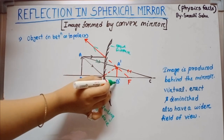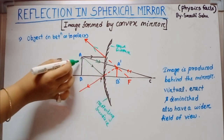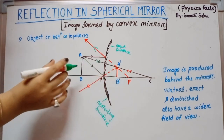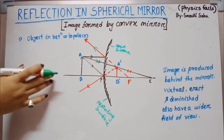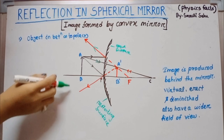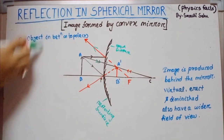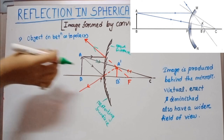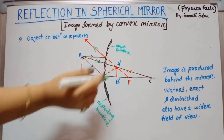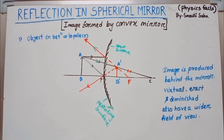The size of the image is very much less than the size of the object. So in the case of a convex mirror, we get a larger field of view. For a larger object, we get a diminished image, which means we are able to see a wider field of view.